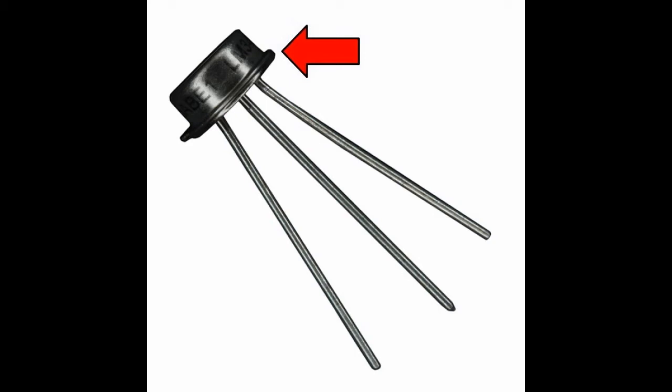The three legs coming out of the semiconductor are the electrical connections for power, ground, and output signal. The output signal for this device is analog.